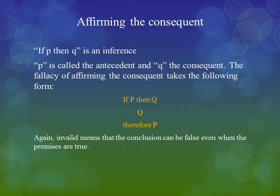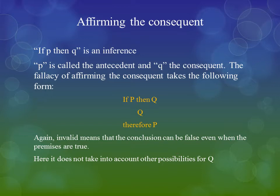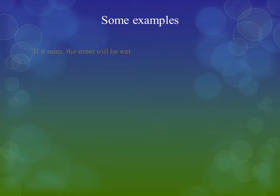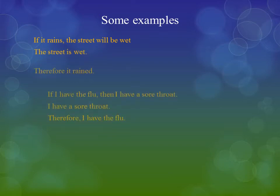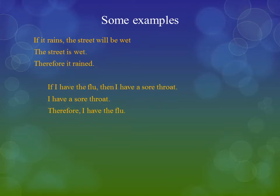This argument is invalid. Invalid means that the conclusion can be false even when the premises are true. The problem in affirming the consequent Q is that I do not take into account other possibilities for Q besides P. For example: If it rains, the street will be wet. The street is wet. Therefore, it rained.